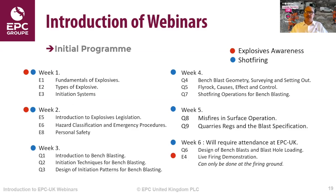Here's the initial program — we've split it into a series of modules, roughly three modules each week, and we'll also do a series of revision exercises for each week. At the end of week one they'll be given by email a revision exercise to do for week two, and at the beginning of week two before we start the modules, we'll go back through the revision exercise on the webinar. In week six that requires attendance at our learning and development centre — half a day for the live firing demonstration and half a day for Q6, which requires quite a lot of interaction and so we'll do that one in the traditional style.